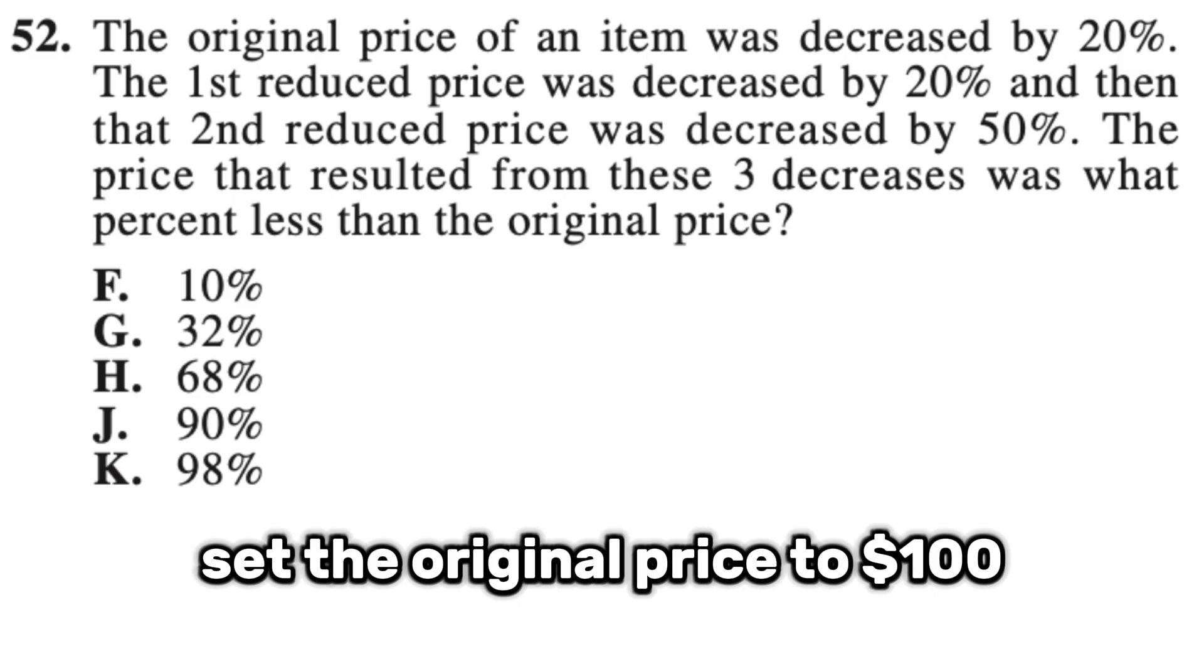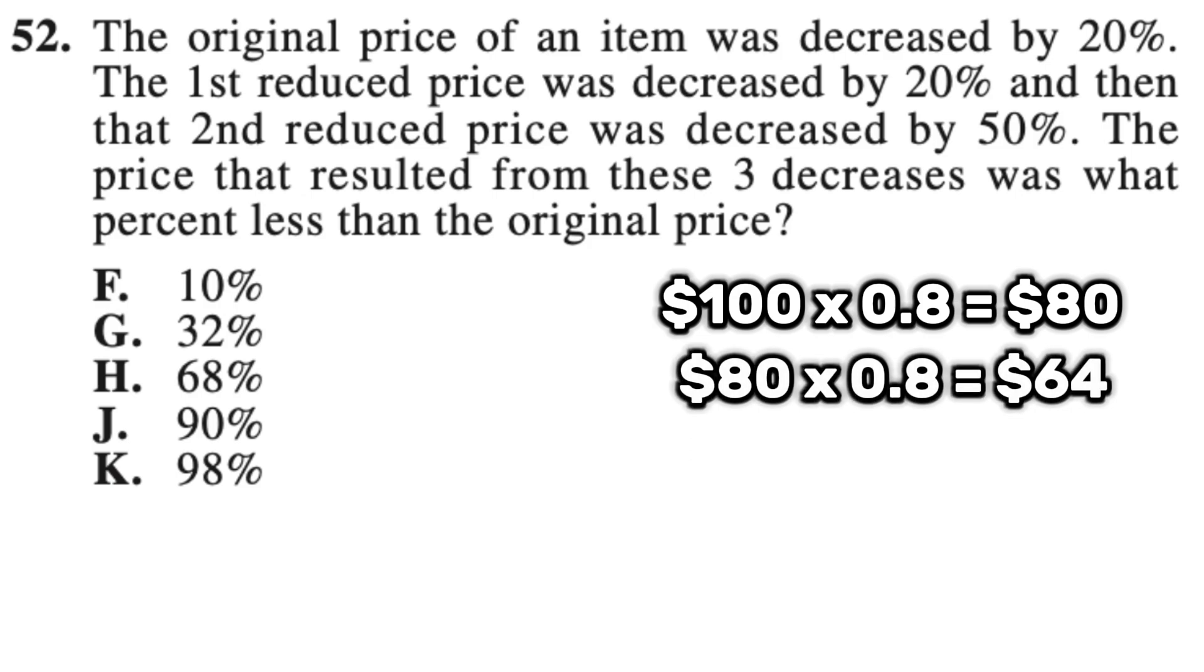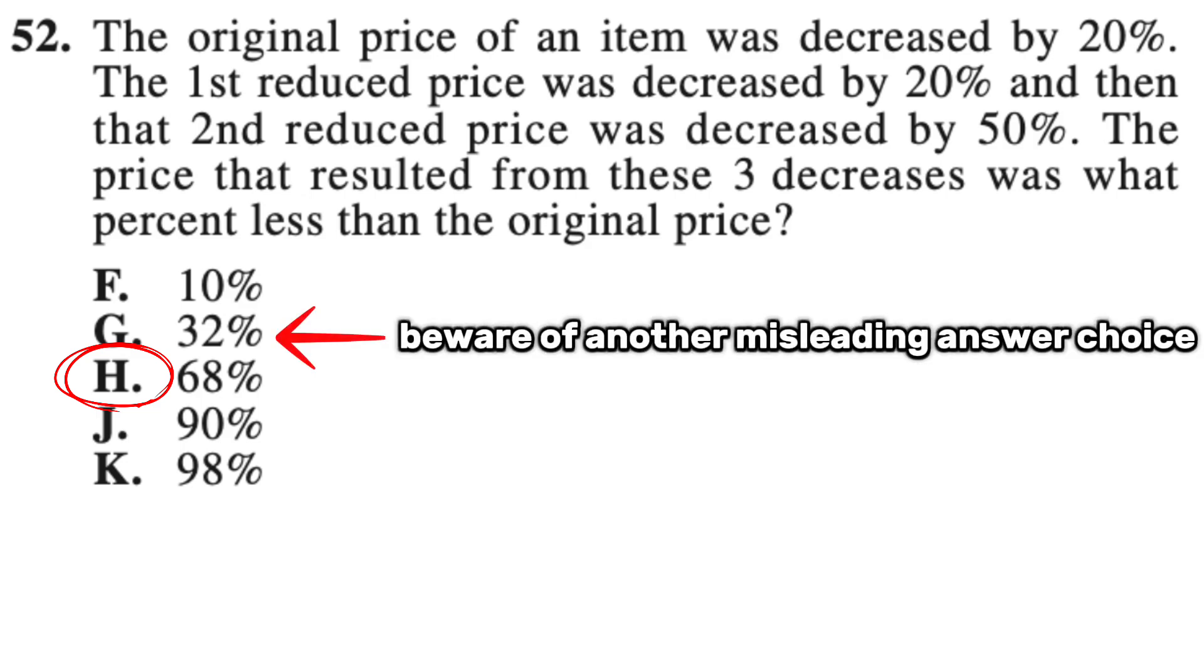And once we have the original price to 100, it'll be much easier for us to see how the prices change as we apply the discounts. So if you decrease the original price by 20%, you would get $80. And if you decrease $80 by 20% again, you would get $64. And if you reduce $64 by 50%, you would get $32. So in total, it was a 68% decrease or answer H. Of course, you could use your calculator to do these calculations much quicker.